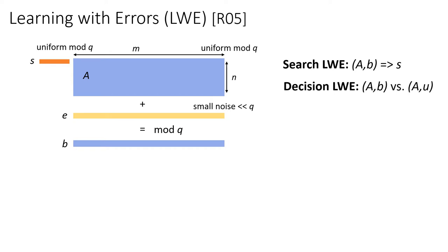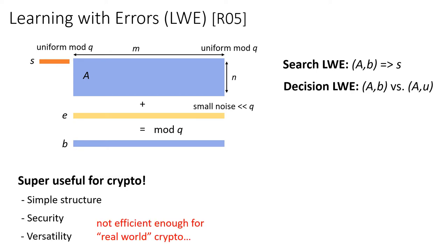There's also the decision version, which is the problem of distinguishing A and B from A and U, where U is just a uniform vector unrelated to S and E. Learning with errors has been super useful for cryptography. It has a simple linear algebraic structure that allows us to use it easily and provides strong security properties, such as presumed post-quantum security and worst-case to average-case hardness reductions, making it an invaluable building block for many cryptographic constructions.